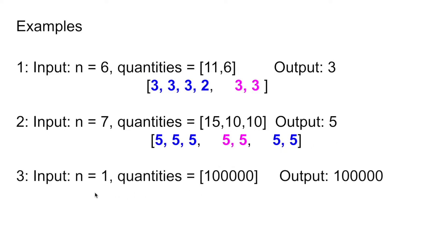Example 3: one store and one type of product. The only option is to put all the products to this store. So the answer is 100,000.